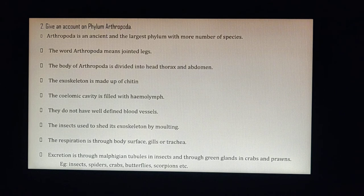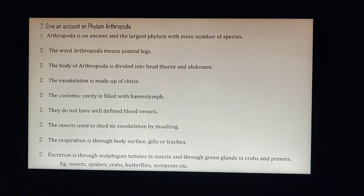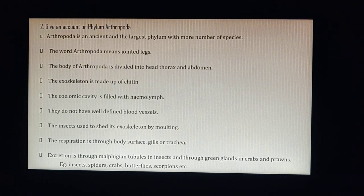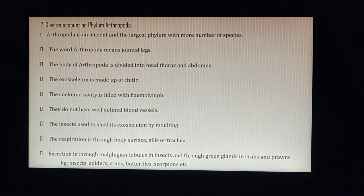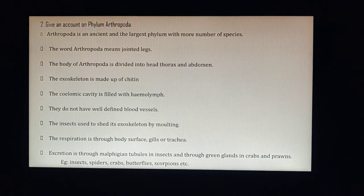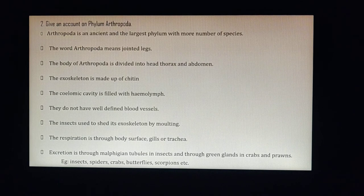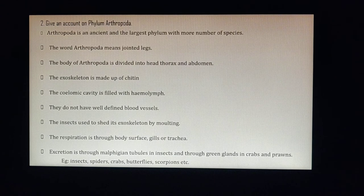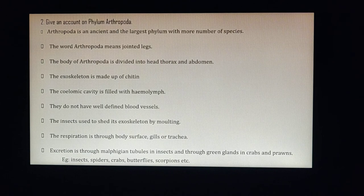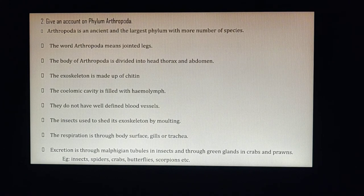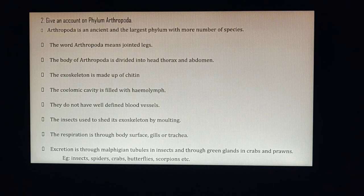Respiration in arthropods can be through the body surface, gills, or trachea depending on the organism. Excretion is through Malpighian tubules in insects and through green glands in crabs and prawns — these are special excretory organs similar to kidneys in humans. All arthropods share the common feature of jointed legs, including millipedes and centipedes.